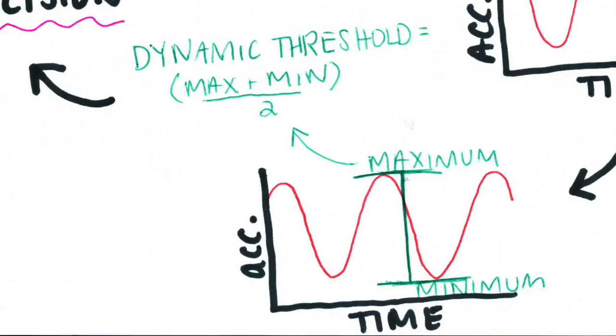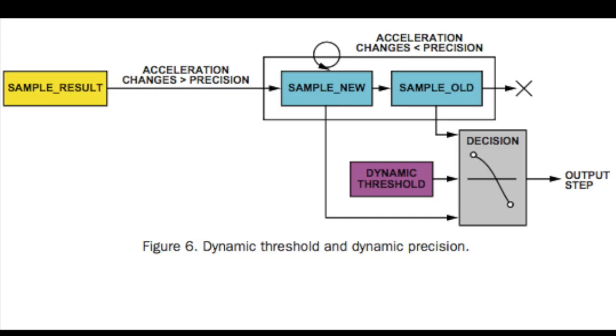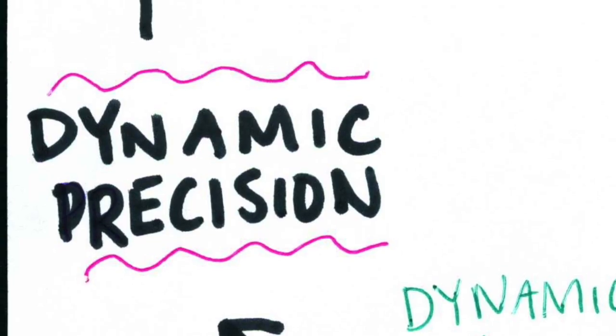To determine whether a full step has been taken, the dynamic threshold level is found. The dynamic threshold level is the sum of maximum and minimum acceleration values for the given axis divided by 2. Dynamic precision is also used to decide if an effective step has been taken using a linear shift register. This takes each new data point and compares it to the most recent data point. If the changes in acceleration between these two points is greater than a predefined precision value, that data point becomes the new set acceleration change for each step. This allows filtering of high frequency noise and helps decide the value of a step more precisely.